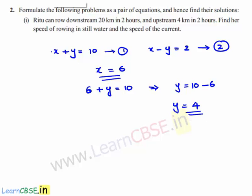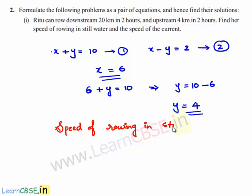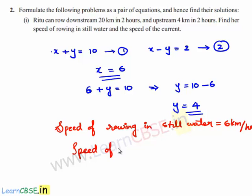Therefore, the speed of rowing in still water is x = 6 km/hr and the speed of the current is y = 4 km/hr.